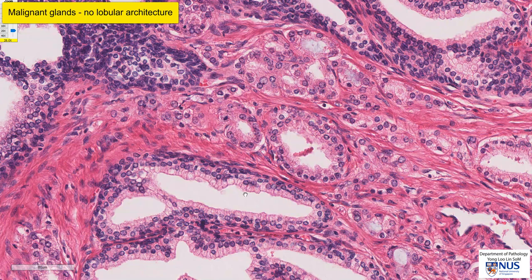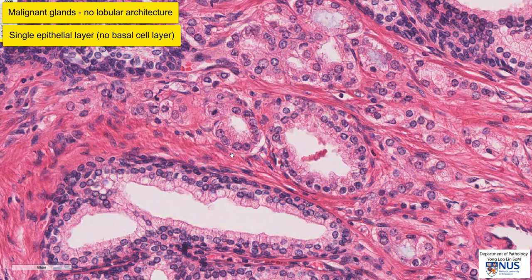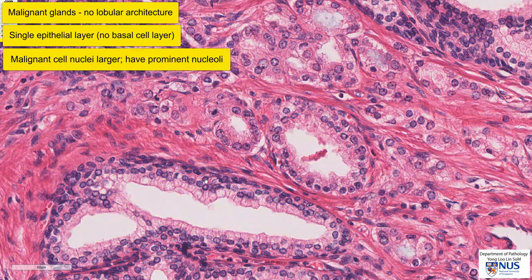If we do a side-by-side comparison, we will first notice that the malignant glands only have a single layer of epithelium. Secondly, the nuclei in the malignant glands are larger than those in the benign glands. And thirdly, the malignant cell nuclei also exhibit prominent nucleoli. We don't see them in every single cell because it depends on the plane of cutting of the nucleus, and we don't see these prominent nucleoli in the benign cell nuclei.